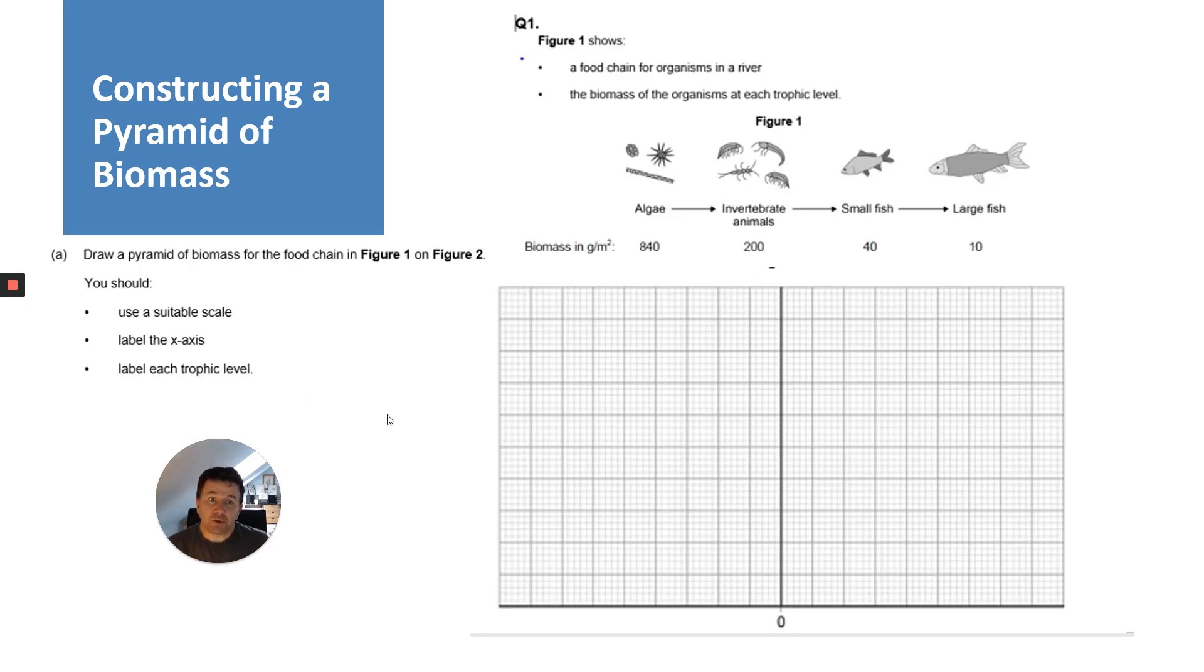I'm going to show you what I've drawn on this graph paper. The first thing is to label the x-axis, so it's biomass in grams per meter squared. You need to use a suitable scale. The biggest number is 840, so half of that is 420.